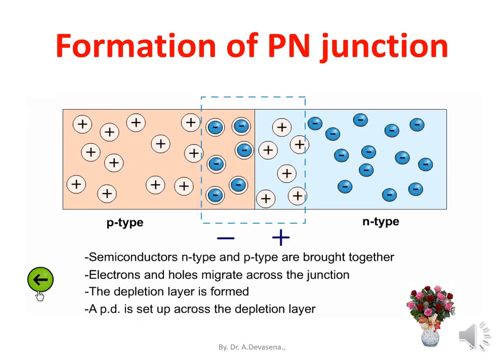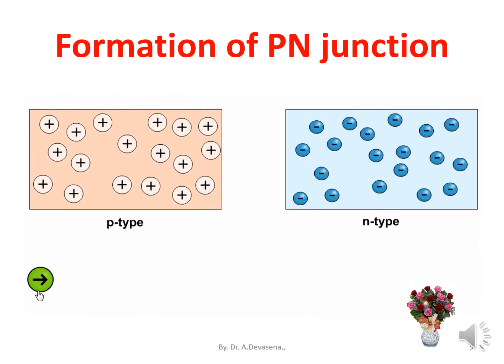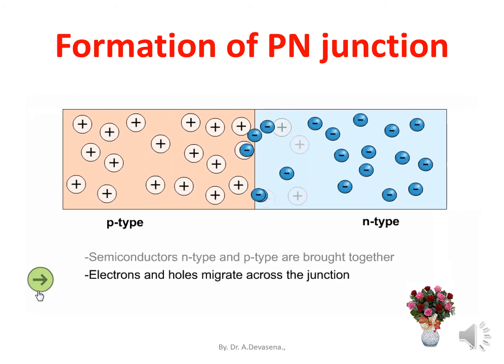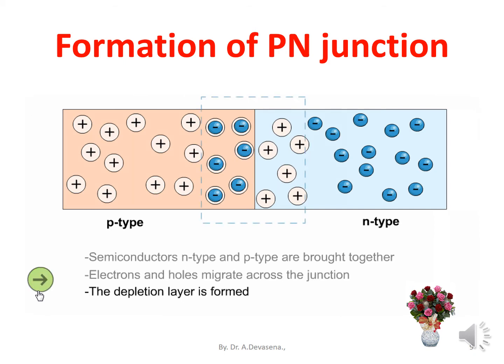Formation of P-N junction: Semiconductors of N-type and P-type are brought together. Electrons and holes migrate across the junction. The depletion layer is formed, and a potential difference is set up across the depletion layer.